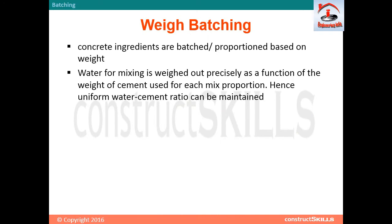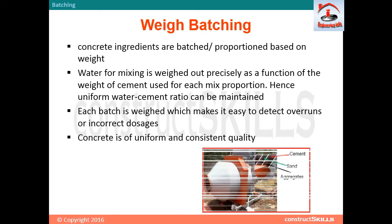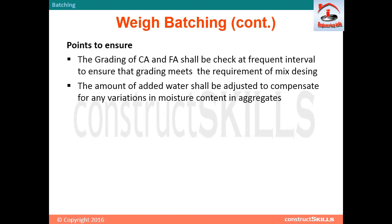In weight batching, concrete ingredients are batched or proportioned based on weight. Water for mixing is weighed out precisely as a function of the weight of cement used for each mix proportion, so a uniform water-cement ratio can be maintained. Each batch is weighed, which makes it easy to detect overruns or incorrect dosages, resulting in concrete of uniform and consistent quality.